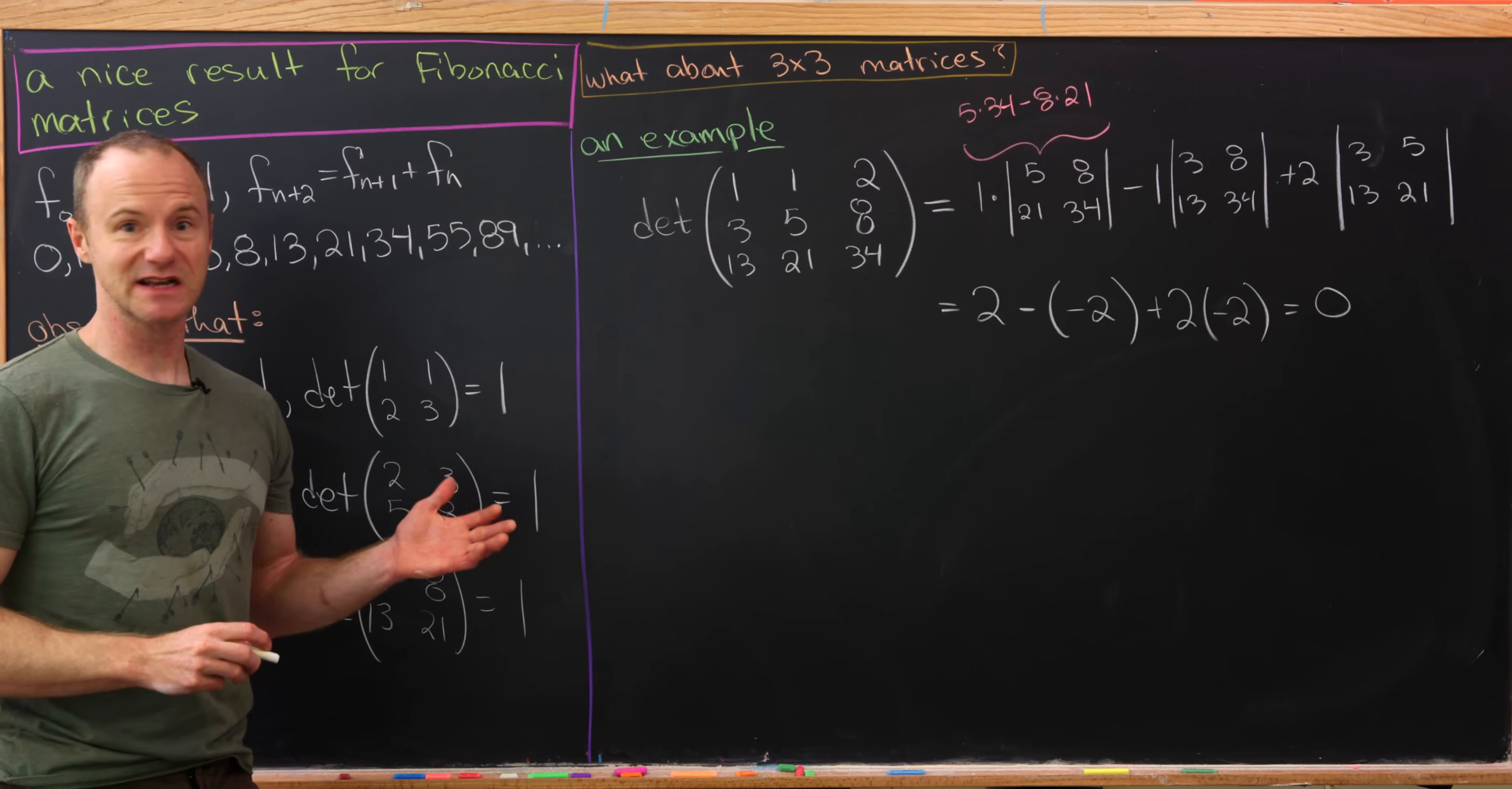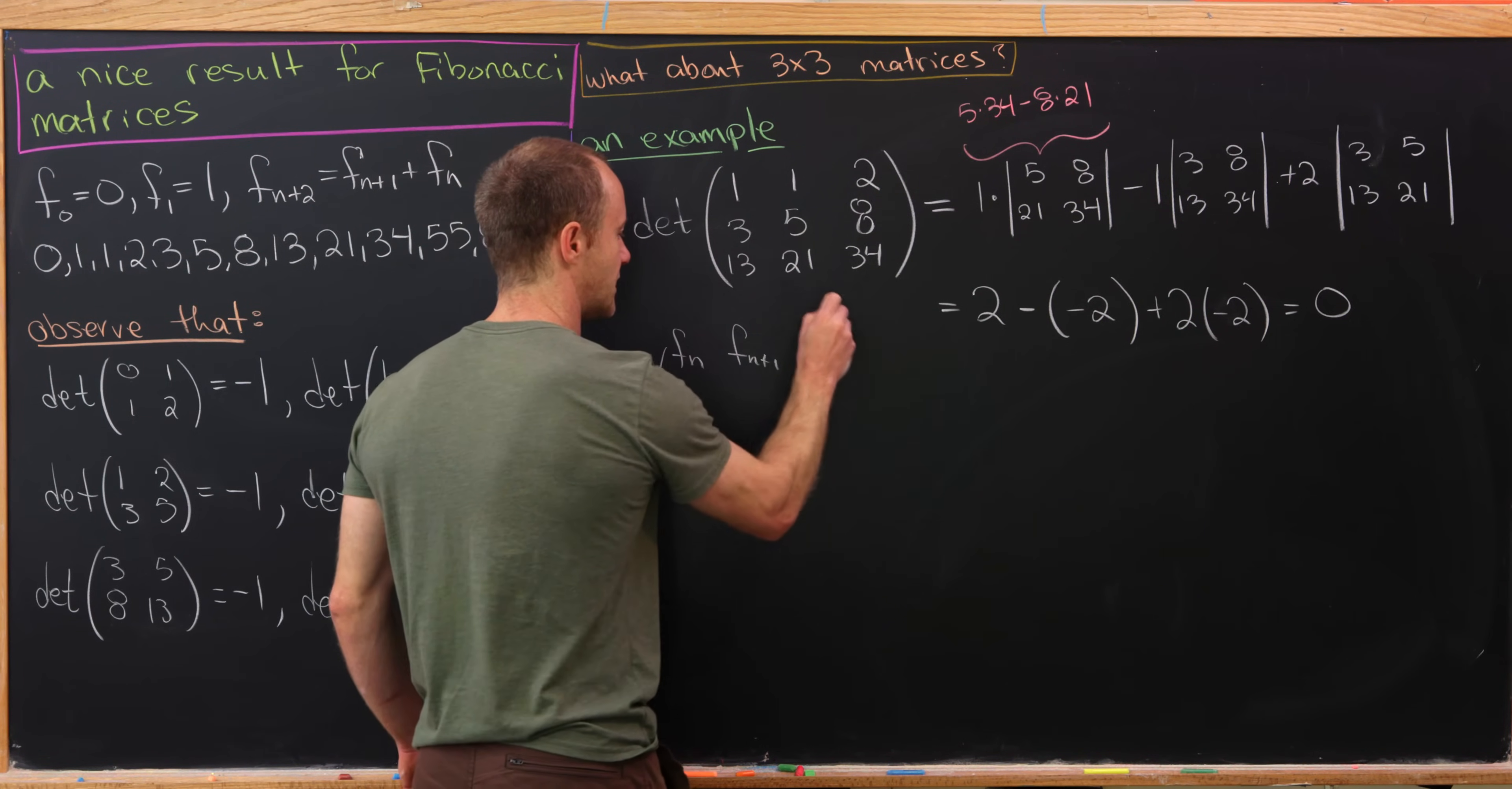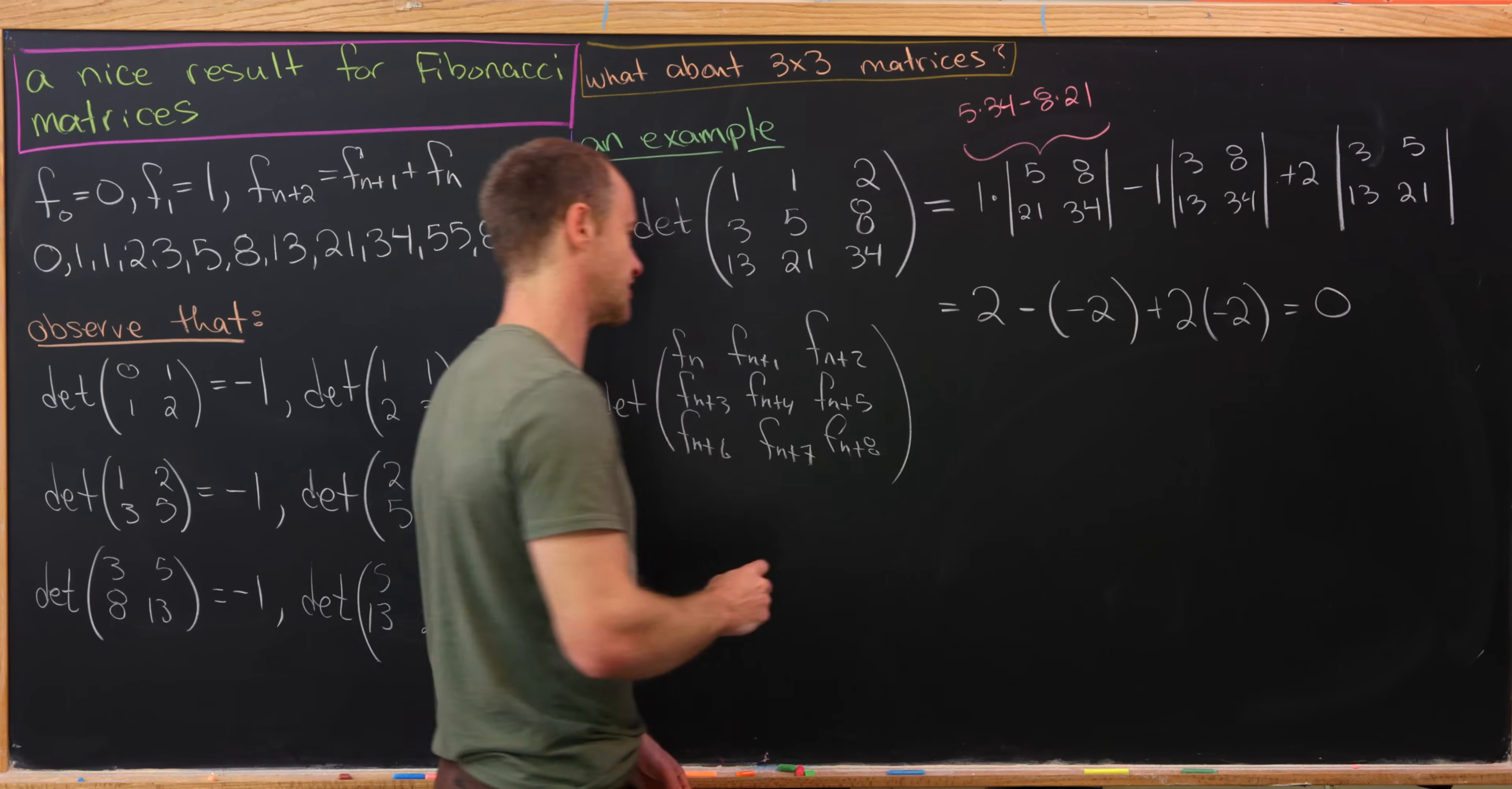So in fact, that's kind of what's going on in general. We'll always get 0 for the determinant. And we can actually prove this fairly easily. So let's write up a general 3 by 3 matrix. So we have fn here, fn+1. Okay. And then fn+2, 3, 4, 5, 6, 7, 8. And then the trick here is to take this third column and write everything in the third column using the Fibonacci recursion.